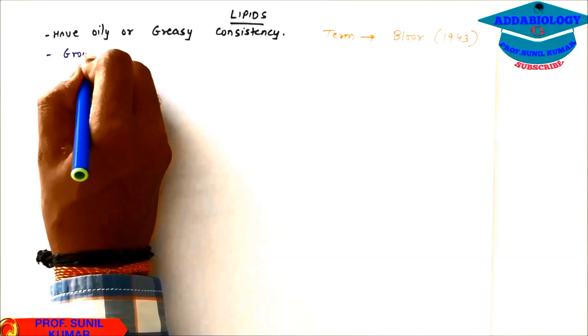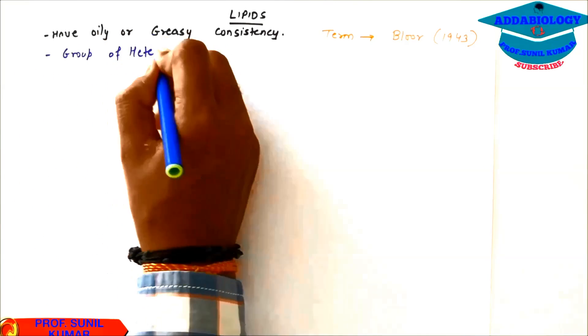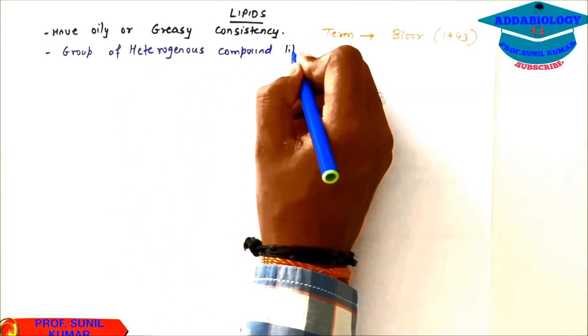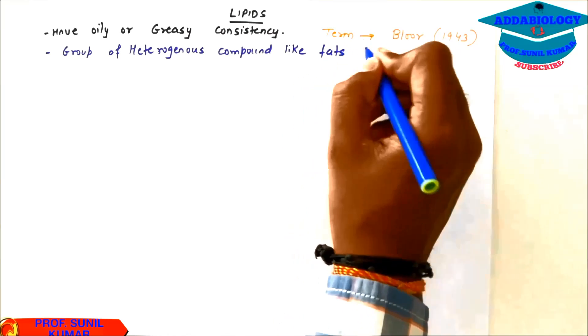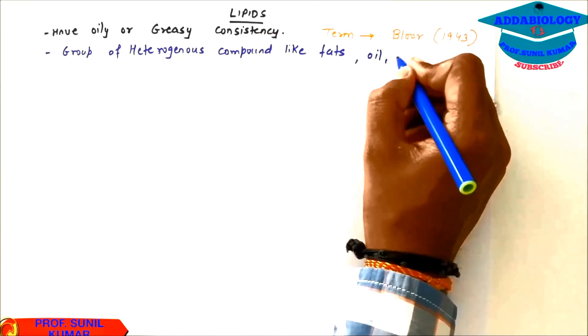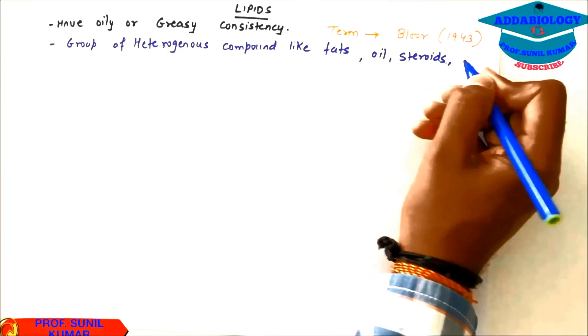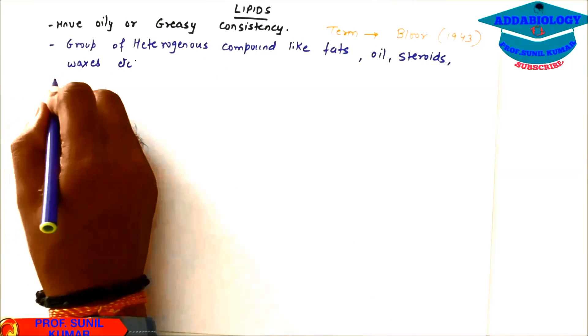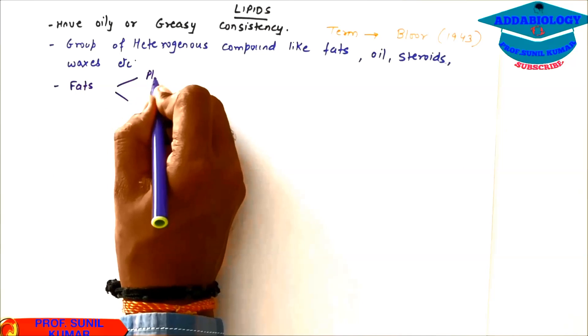What are lipids? Actually they are group of heterogeneous compounds like fats, oils, steroids, waxes, etc. Whenever we talk about fats, we need to understand that fats are found in both plants as well as in animals.